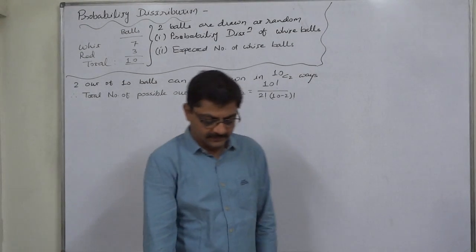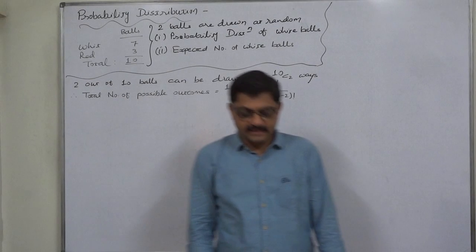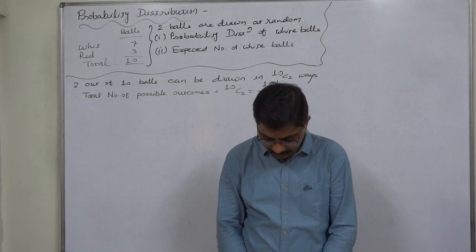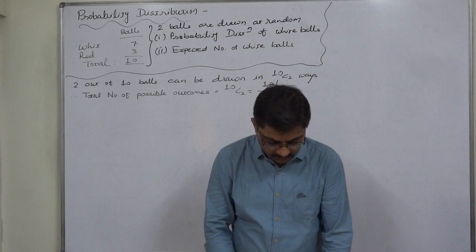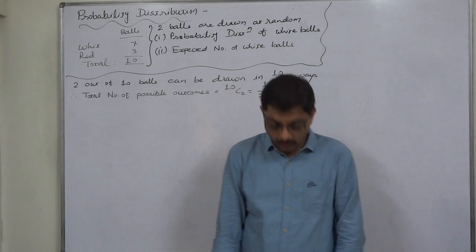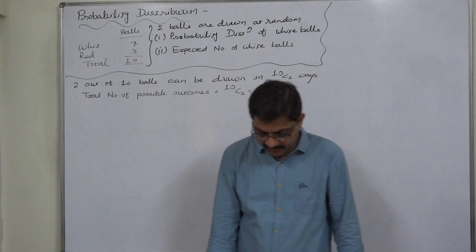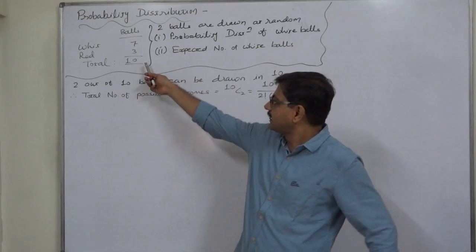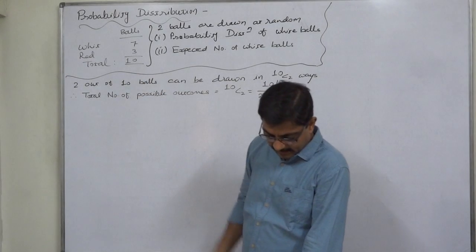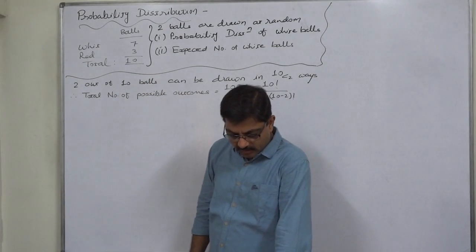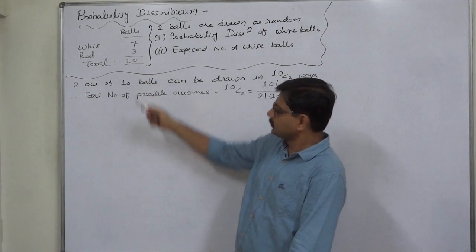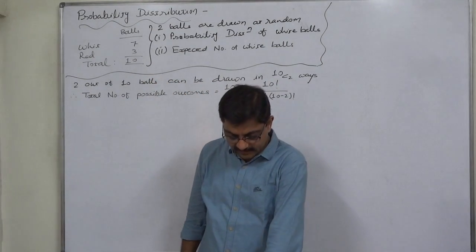Hello and welcome. The next case in probability distribution: a box contains seven white and three red balls, so total number of balls is ten. Two balls are drawn together at random out of these ten balls.